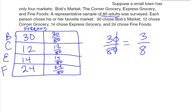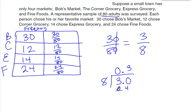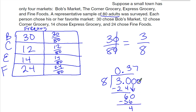I could also write this as a decimal. To write it as a decimal, I'm going to do 3 divided by 8. 8 cannot go into 3, so I need to add a decimal and a zero. 8 goes into 30 three times — that's 24. Subtract, we have 6 left over. Add a zero and bring it down. 8 goes into 60 seven times — 8 times 7 is 56. Subtract, 4 left over. Add a zero, bring it down. 8 goes into 40 five times. So the probability is either 3 eighths or 0.375.